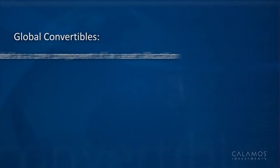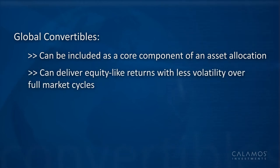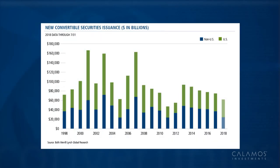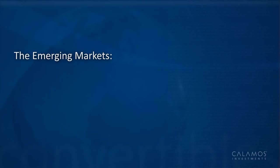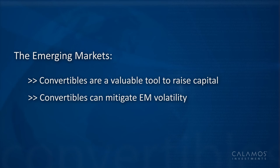We believe global convertibles can be included as a core equity component of asset allocation. Global convertibles have been able to deliver equity-like returns with substantially less volatility over full market cycles. Global companies have been active participants in the convertible market for many decades, and we expect this to continue. Issuance over recent years has been roughly equally divided between U.S. and non-U.S. markets. We believe international companies can be important drivers of issuance as companies around the world seek access to capital. The convertible market is always evolving, and one area we are watching is the emerging markets, where convertibles can be a valuable tool for companies to raise capital, as the convertible structure can mitigate volatility associated with those markets.